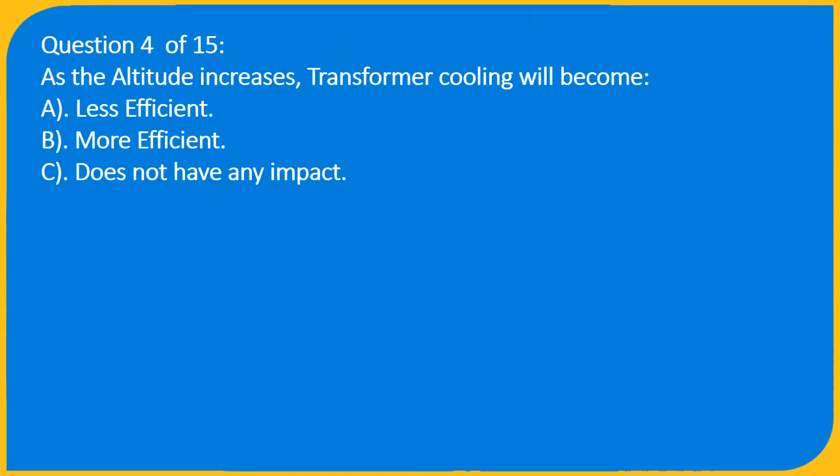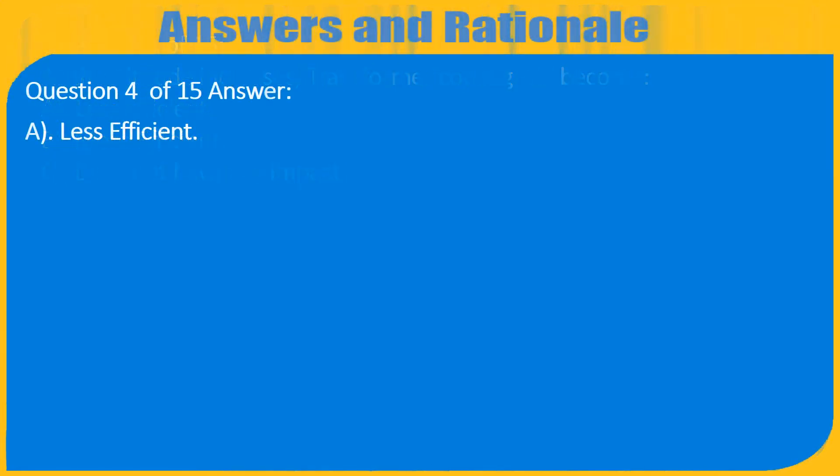Question 4 of 15: As the altitude increases, transformer cooling will become — A. Less efficient. B. More efficient. C. Does not have any impact. Answer: A. Less efficient.